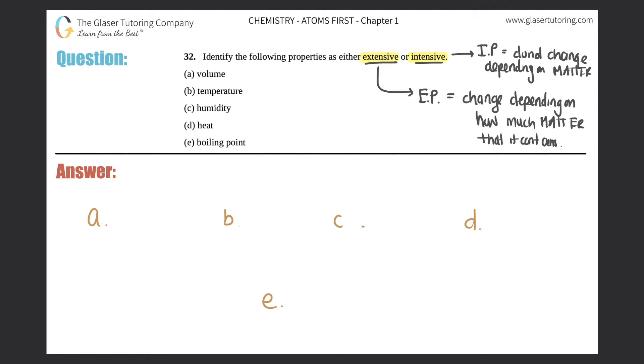The standards for extensive properties: mass changes depending on how much you have, volume will change, and heat. Know those three. There could be other ones, but those three are the main ones. Intensive properties are melting point, boiling point, temperature, color, etc.